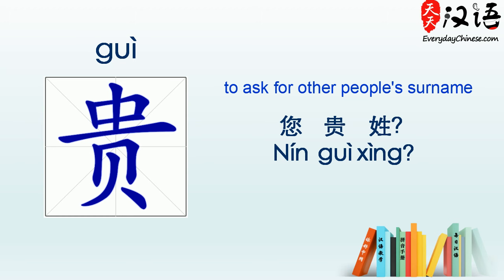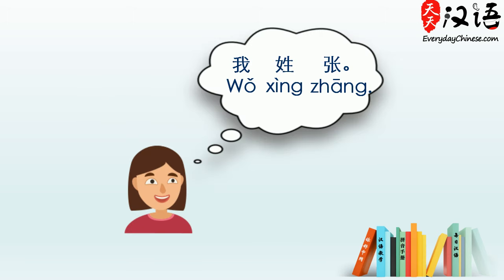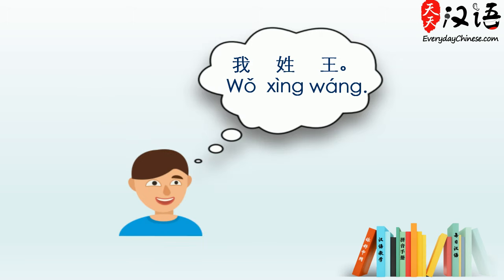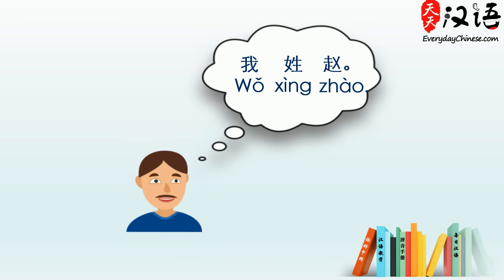Now, listen and try to catch their surnames: 我姓张. 我姓王. 我姓李. 我姓赵.